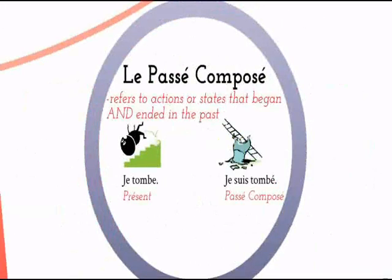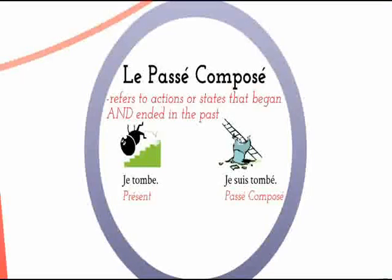Back to our first example. To say 'I am falling' would be je tombe. But in the passé composé, I would say je suis tombé — 'I fell.' Simple as that.